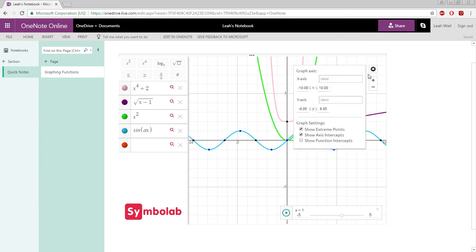Here you're able to label your axes, change the range of your axes, and decide if you want to show extreme points, axes intercepts, and function intercepts by clicking the box to the left of it.